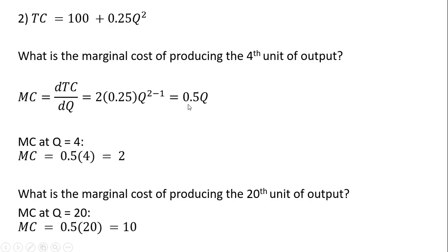That simplifies down to 0.5q, so marginal cost equals one-half q. To figure out what marginal cost is at the fourth unit of output, plug 4 into the marginal cost equation — where you see q, plug in 4 — and the marginal cost will be $2.